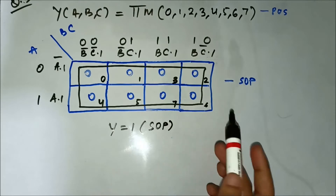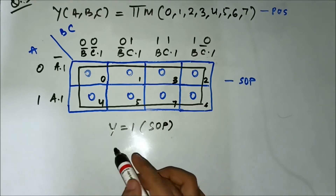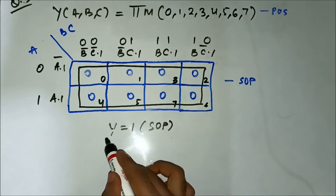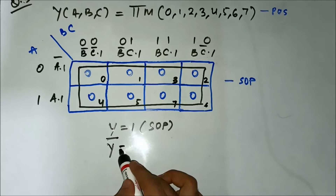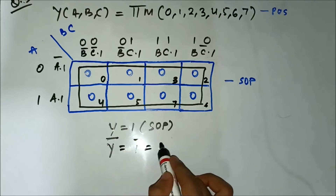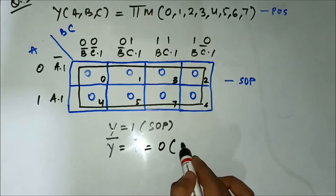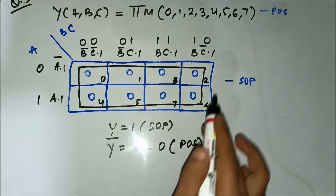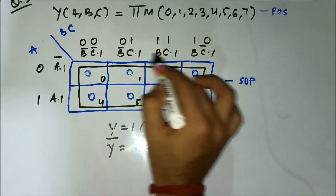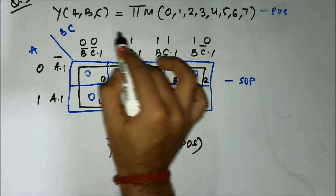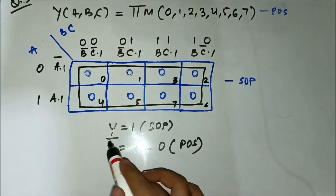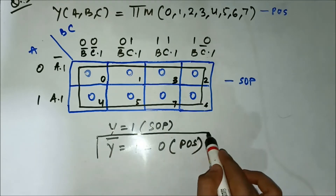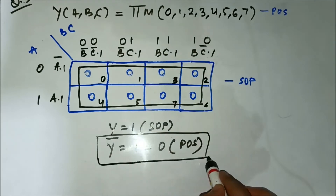The result will be y equals 1 — the simplified Boolean expression — but it is in SOP form. For POS, like we did in all the previous cases, we just have to take the complement, which is 0. This is the simplified Boolean expression for this POS expression given in terms of the max terms. This is the result.